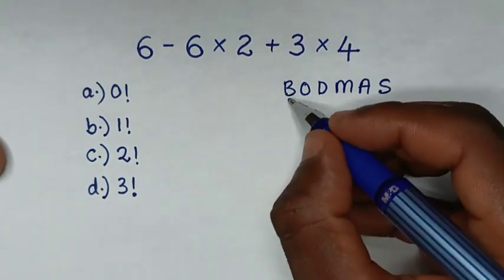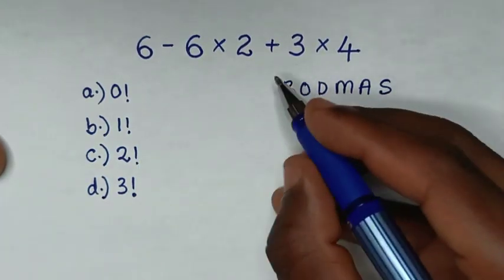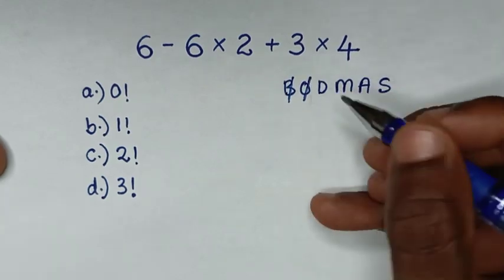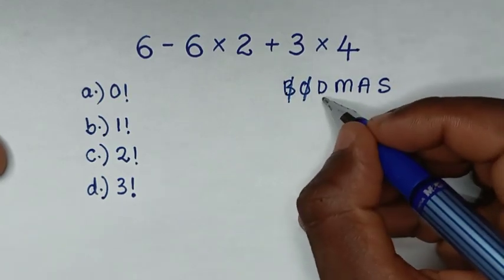B is bracket. In this problem, we don't have bracket. Also, we don't have order or exponents. Division, we don't have division.